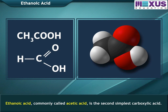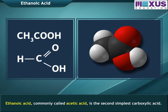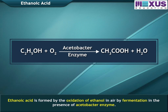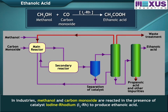Ethanoic acid, commonly called acetic acid, is the second simplest carboxylic acid. It is formed by the oxidation of ethanol in air by fermentation in the presence of acetobacter enzyme. In industries, methanol and carbon monoxide are reacted in the presence of a catalyst — iodine-rhodium — to produce ethanoic acid.